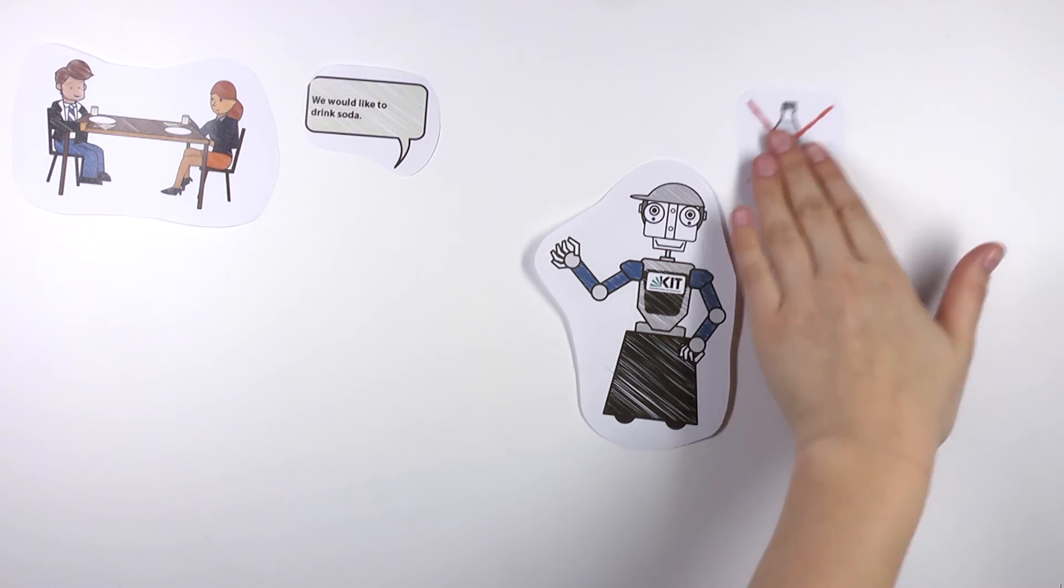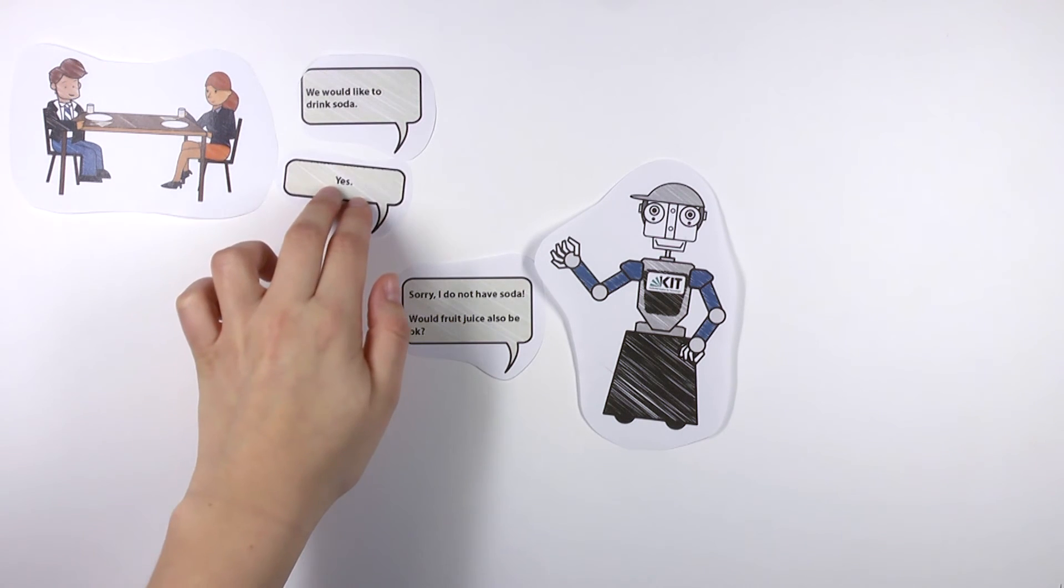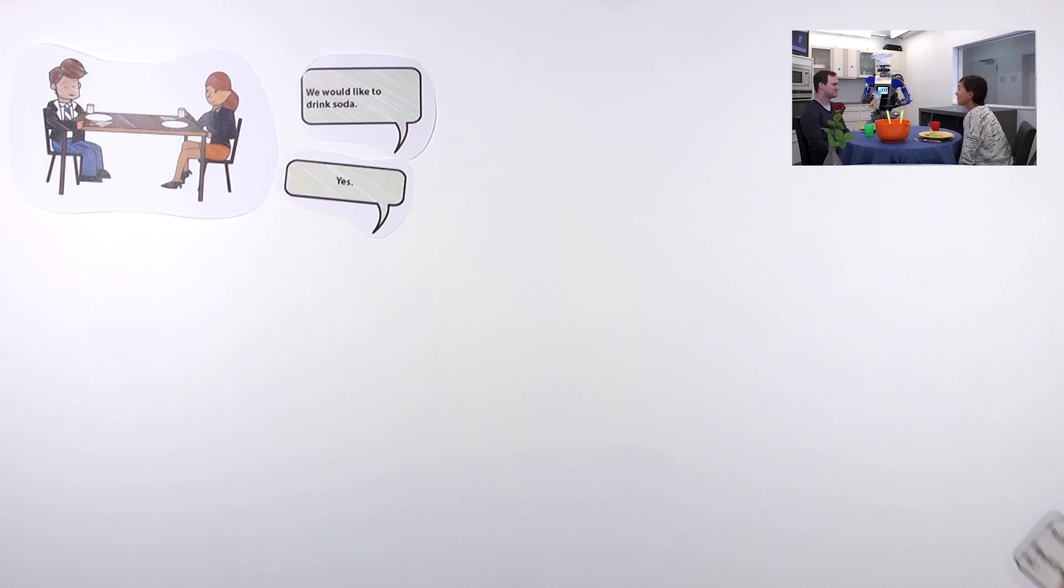Consequently, Ama asks Mirko whether fruit juice would also be okay. When Mirko answers in the affirmative, Ama brings the fruit juice.